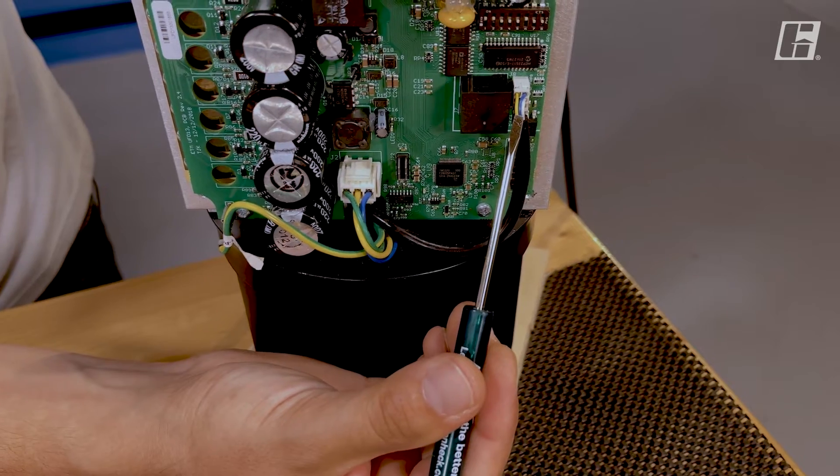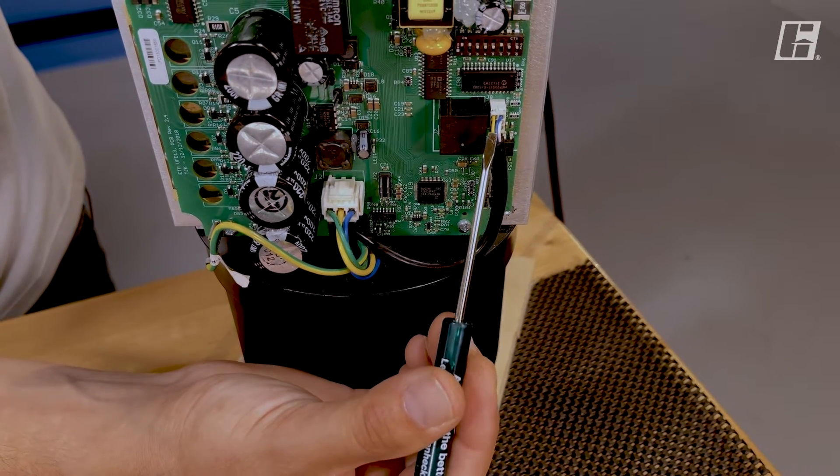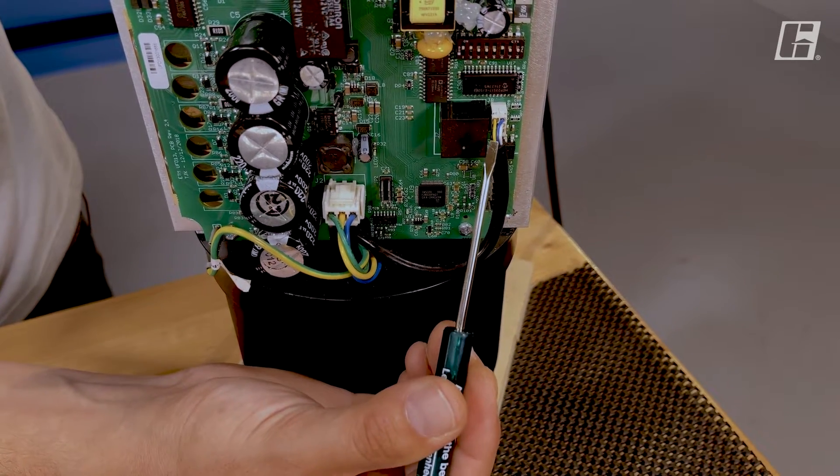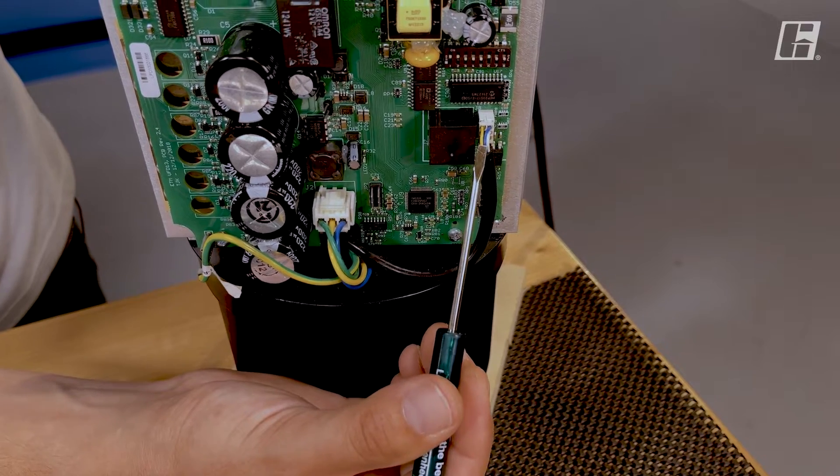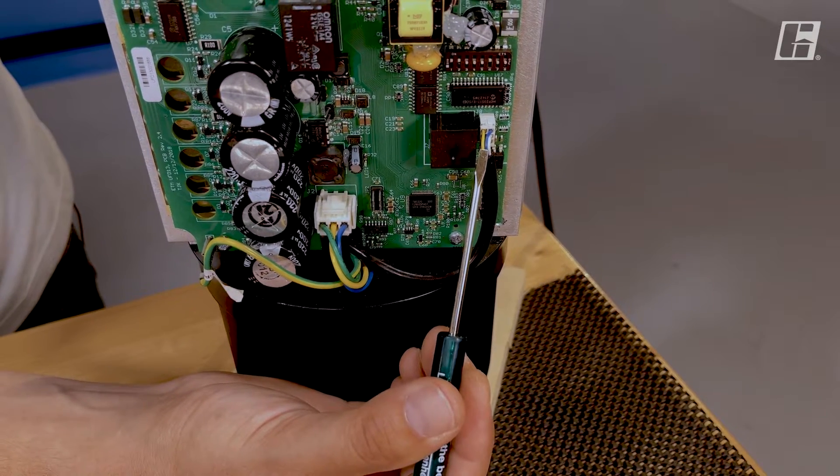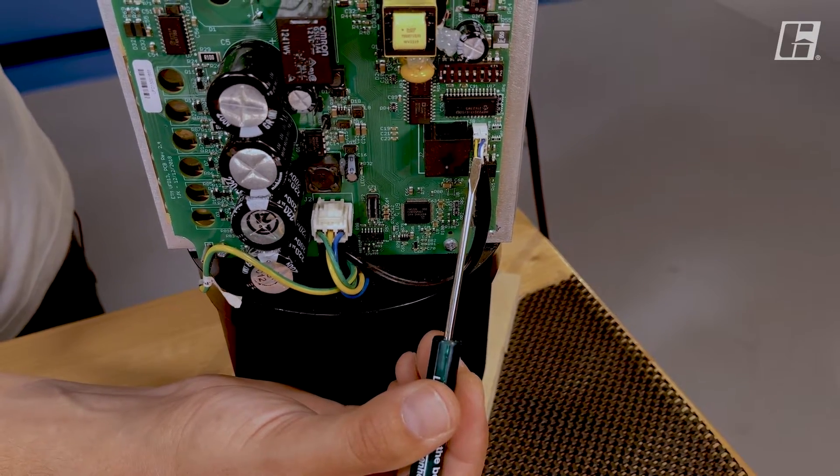The hall effect sensor gives feedback to the drive. If this is plugged in incorrectly, upside down, or not all the way, the motor will stall and think that there's an impact detection because it can't tell the direction that it's rotating.